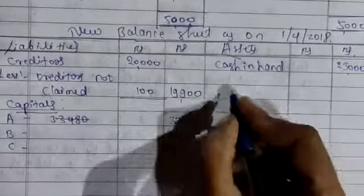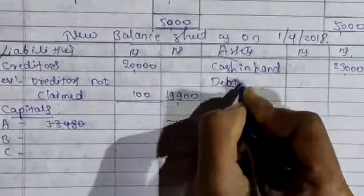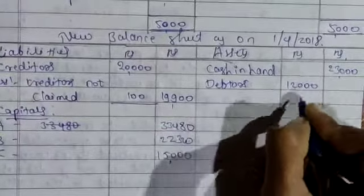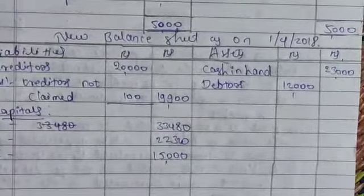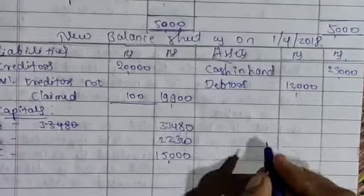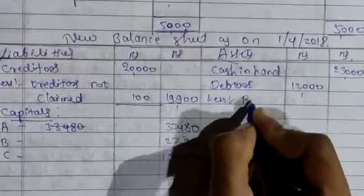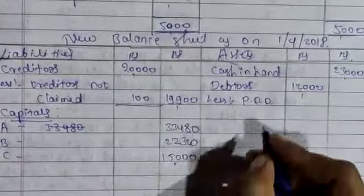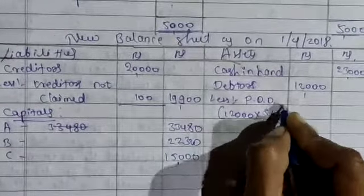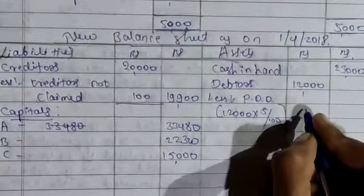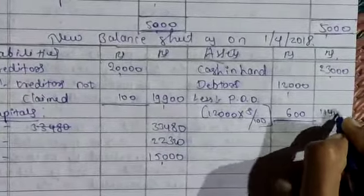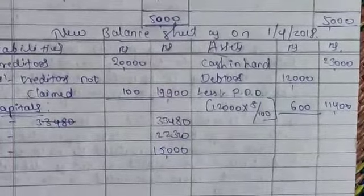Next item is debtors. Debtors from the old balance sheet amount — that is 12,000. And there is an adjustment for debtors. PDD amount is there, so that should be deducted. Less PDD: on the 12,000 amount, calculate 5% — you already calculated that — so it becomes 600. So now the closing debtors value is 11,400.